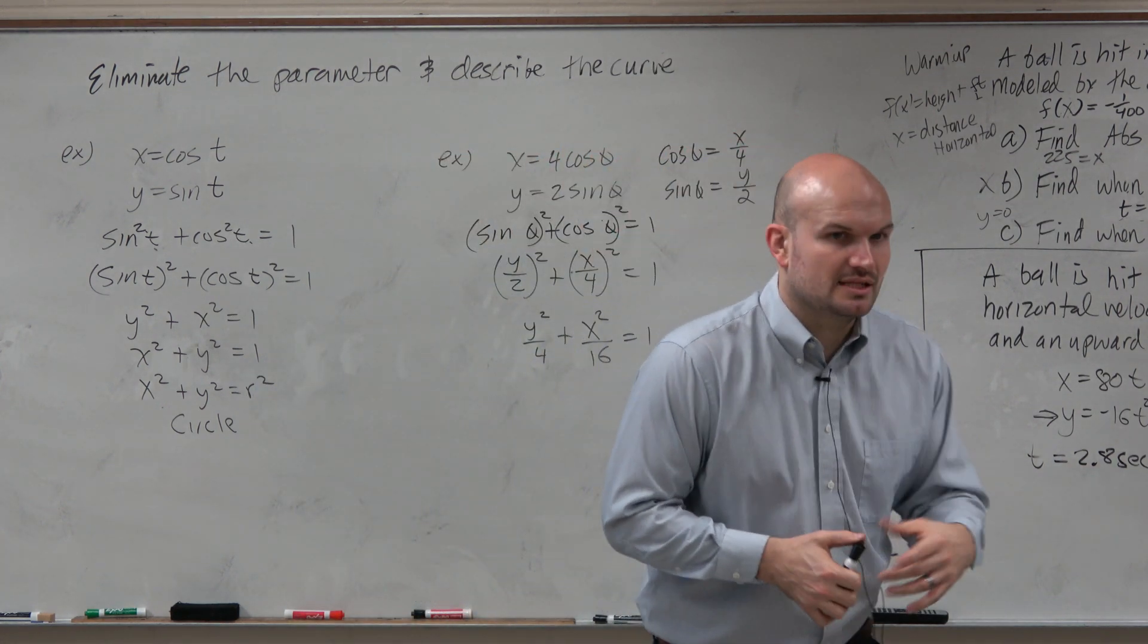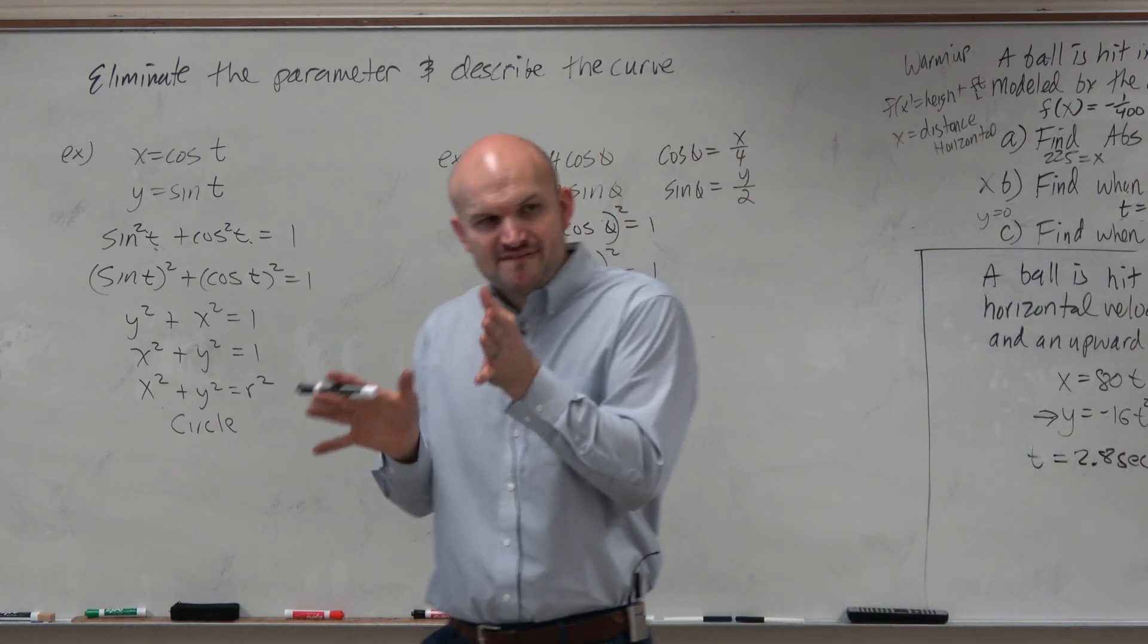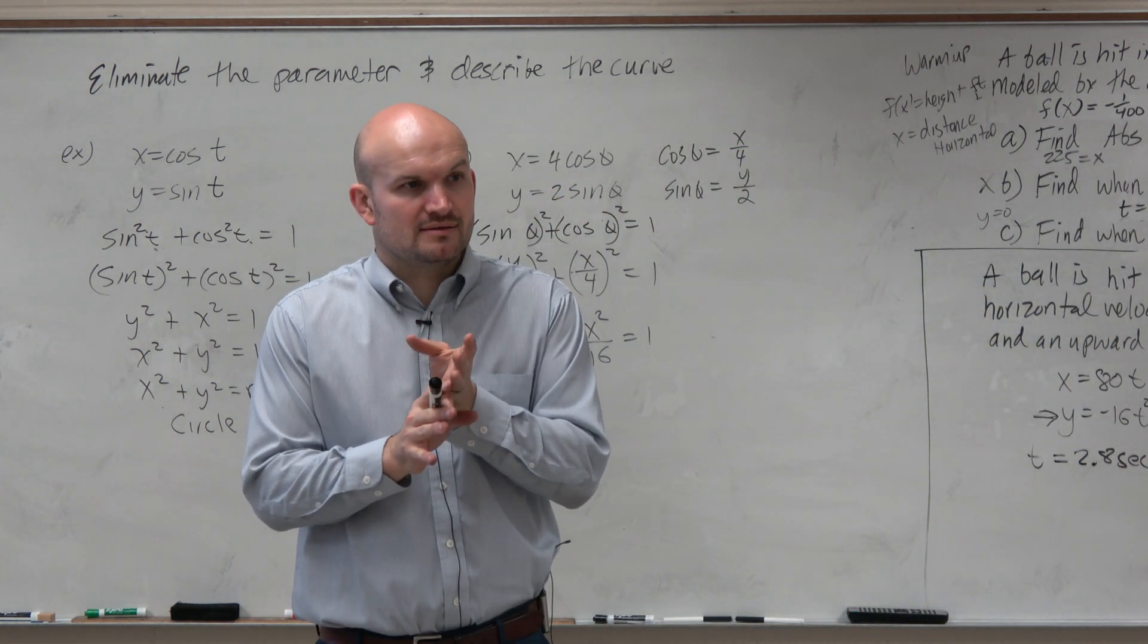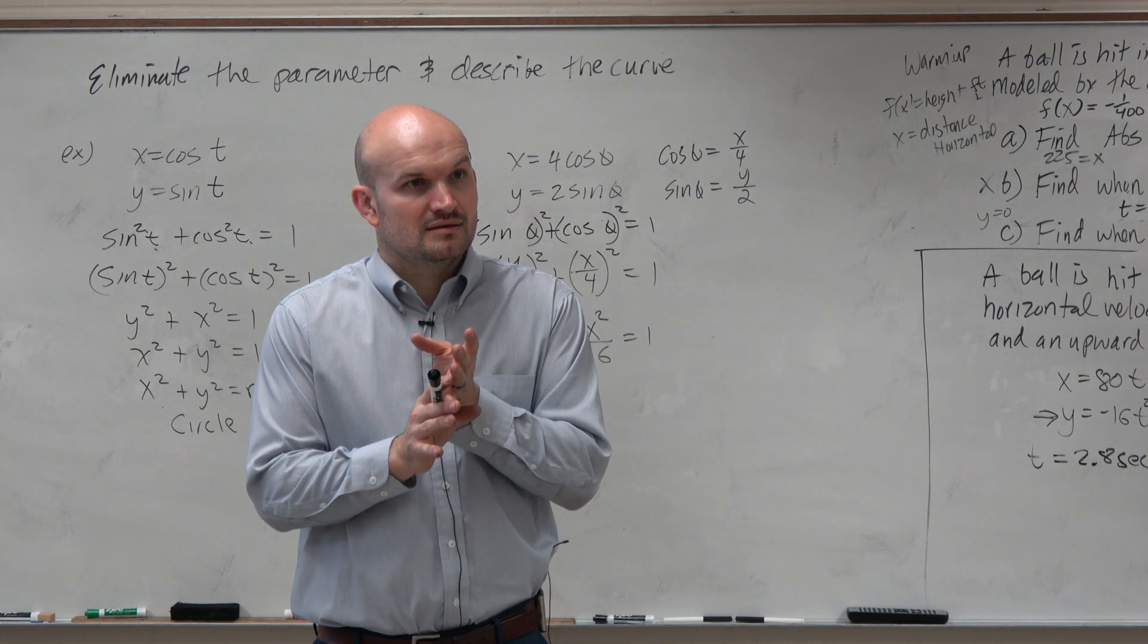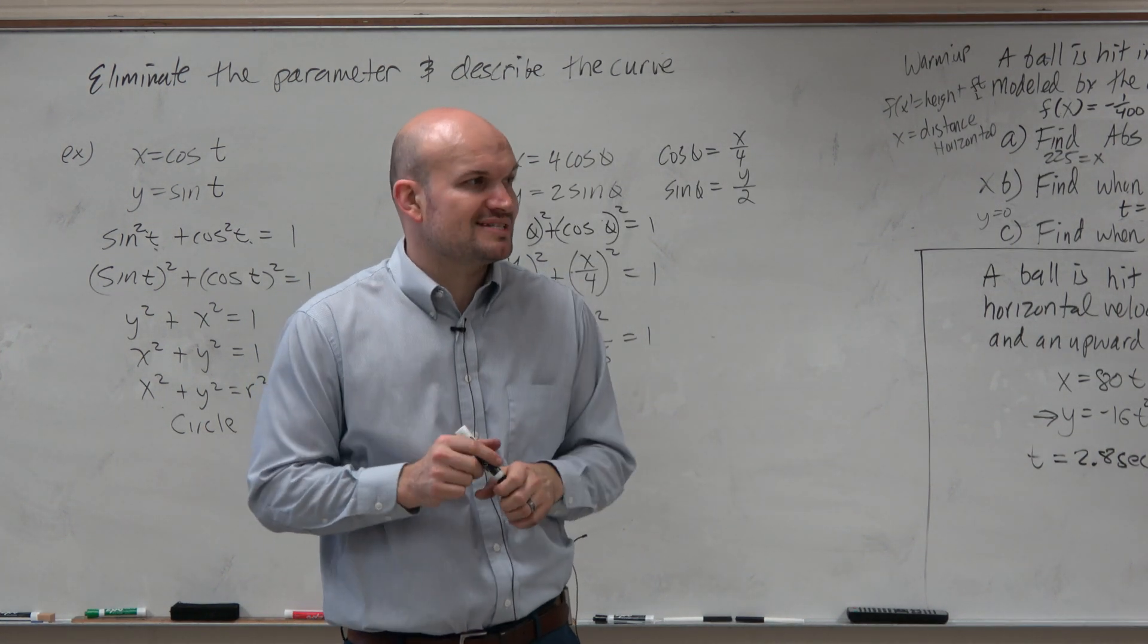Now, does this look exactly like the circle? No, it looks like one variable is being affected a little bit more than the other variable, right? So it's going to be an oval. Or, mathematically, we can call this an ellipse.